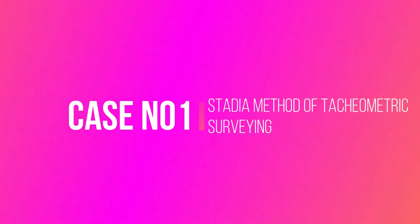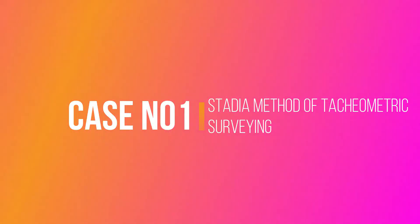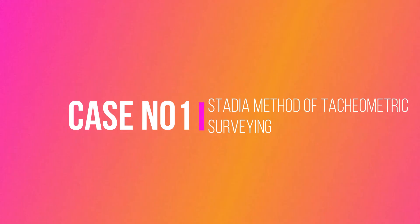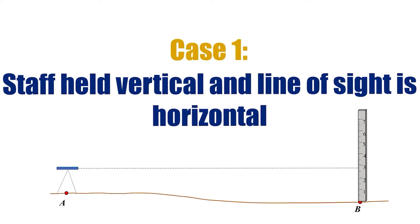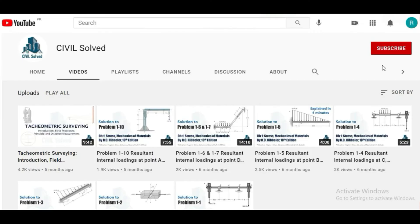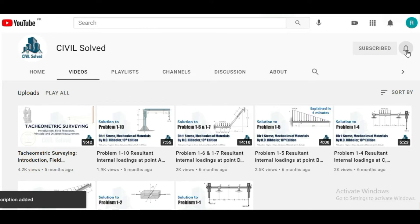Hello everyone. In this video we are going to discuss case number one of the stadia method of tachymetric surveying, in which the staff is being held vertical and the line of sight is horizontal. If you are new to the channel, please subscribe and click on the bell icon to get regular updates.